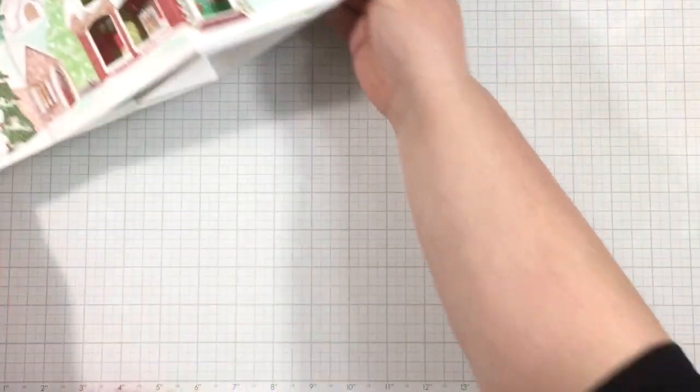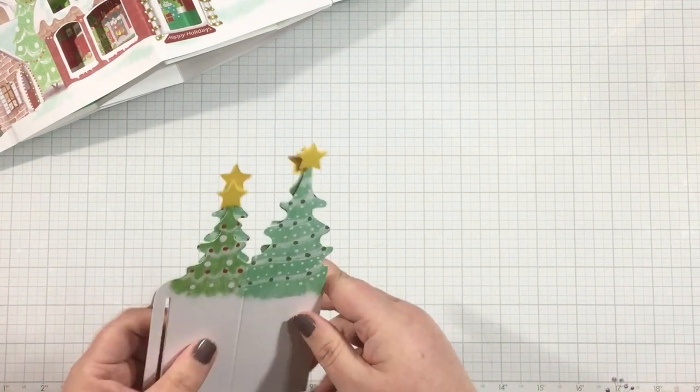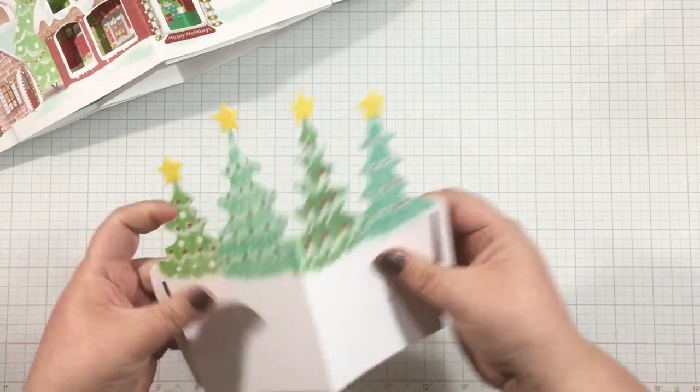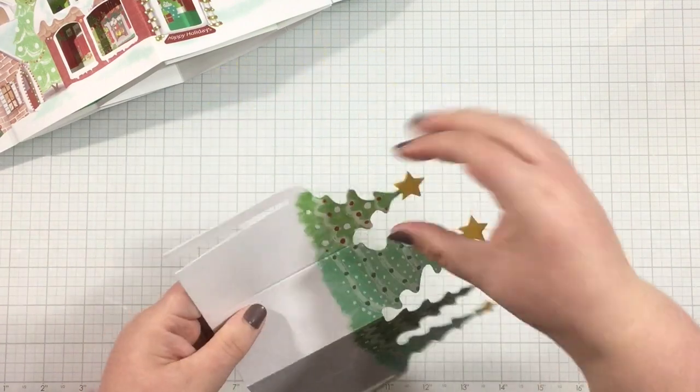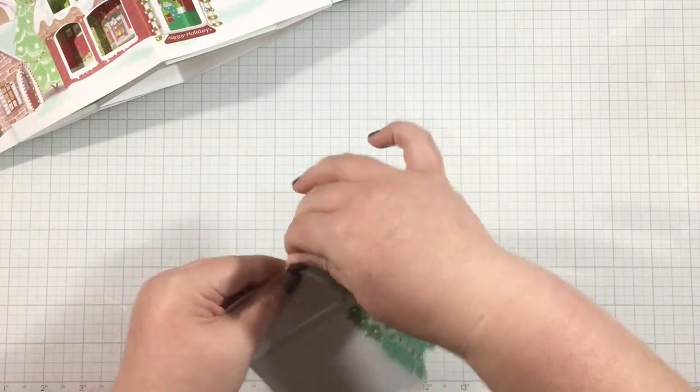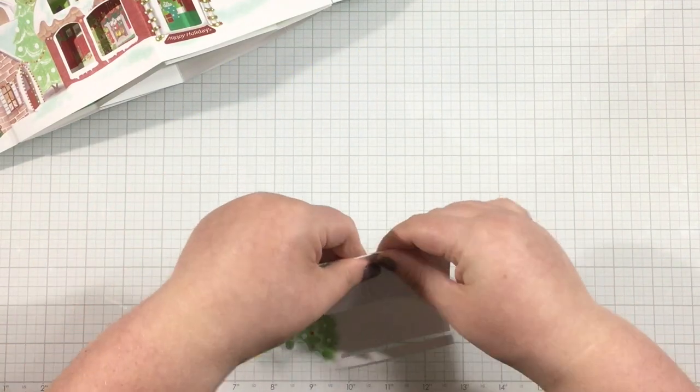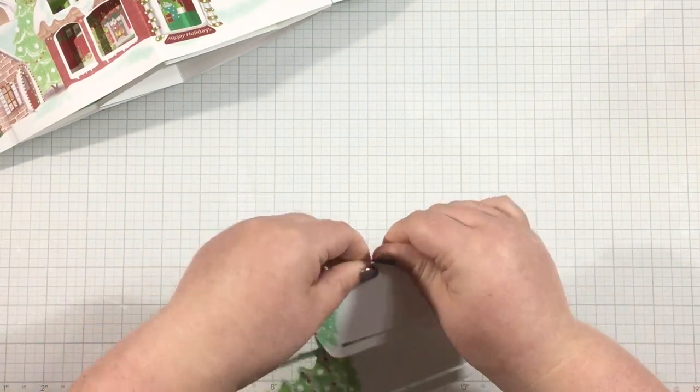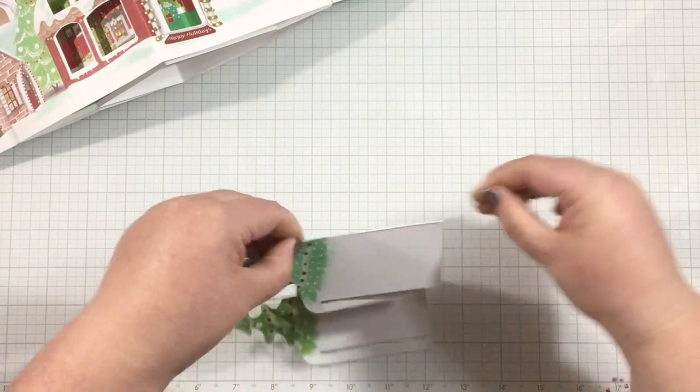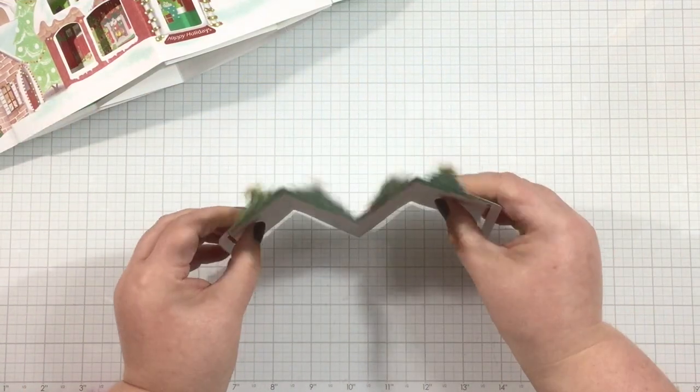Everything's looking good, and there's only one more piece left to add to this concertina card. You're going to find your tree insert, and this tree insert piece is the easiest piece to work with because it does not require any adhesive at all. This should be a free-moving piece. I'm going to fold along those score lines and flip my concertina card back over to the front.